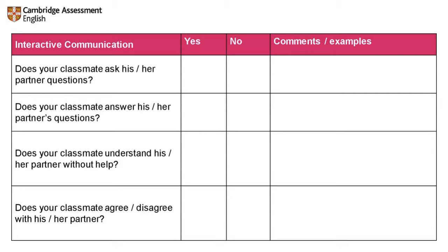We wrote down the interactive communication criteria and made it as simple as possible for A2 — it's on your handouts. Do they ask each other questions? The questions could be very basic. We tried to point them in the direction of what they need to do during the task: checking if they need help and whether they can show if they agree or disagree with their partner at a very basic level, because we know this is A2.